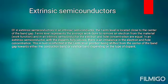In an extrinsic semiconductor where dopants are fully ionized, there is an imbalance in the electron and hole concentration. This results in the Fermi level position being shifted from the center of the band gap towards either the conduction band or the valence band, depending on the type of dopant.